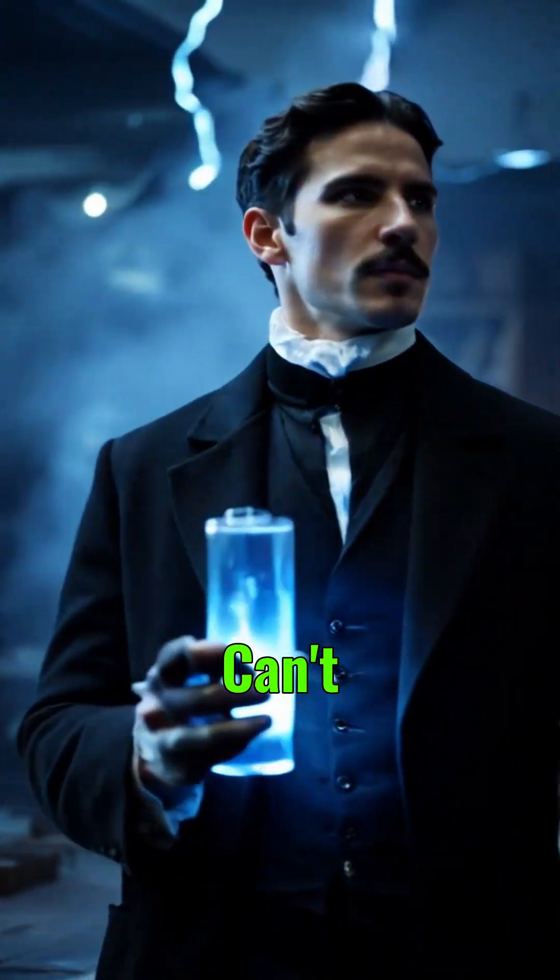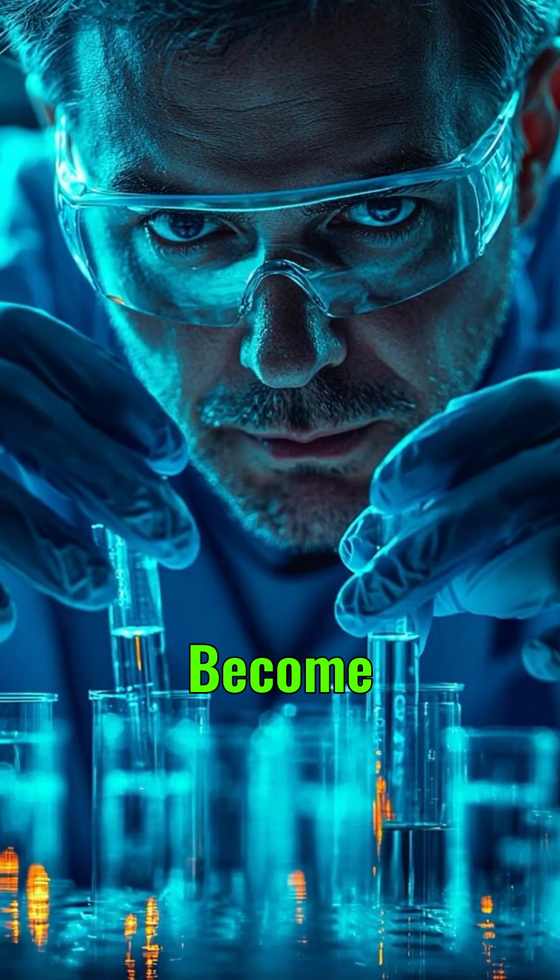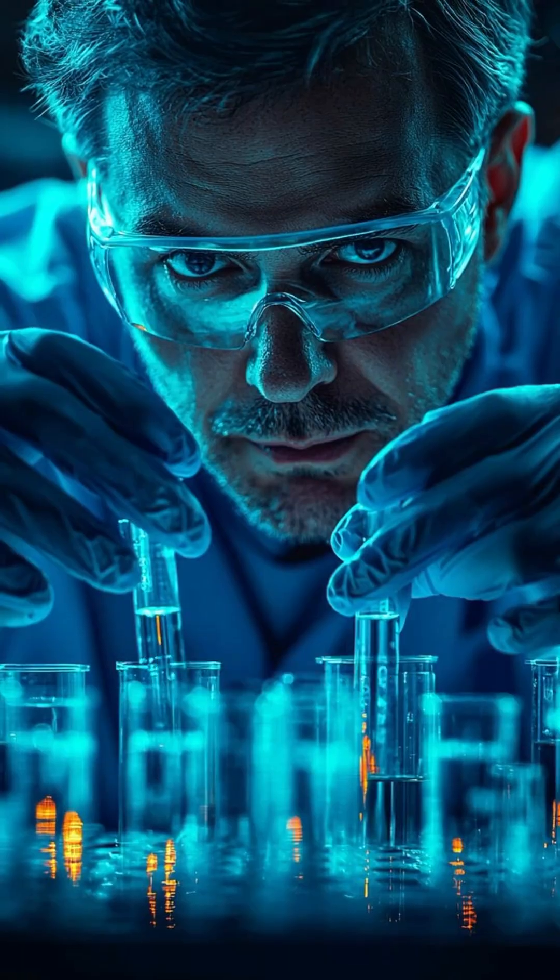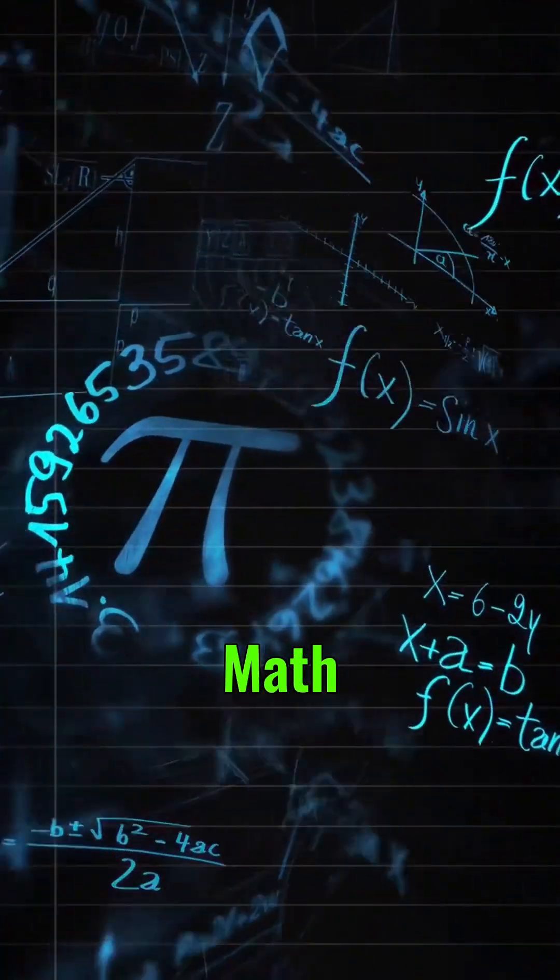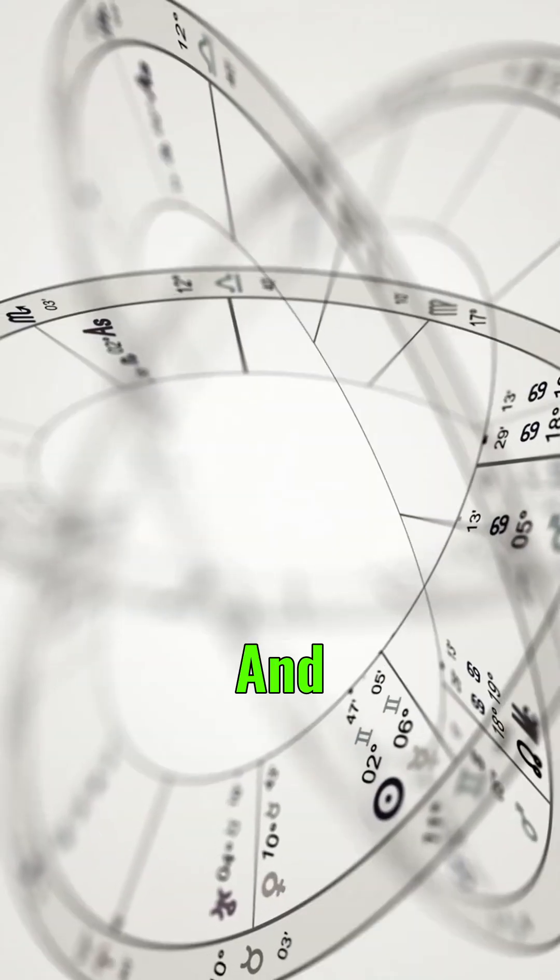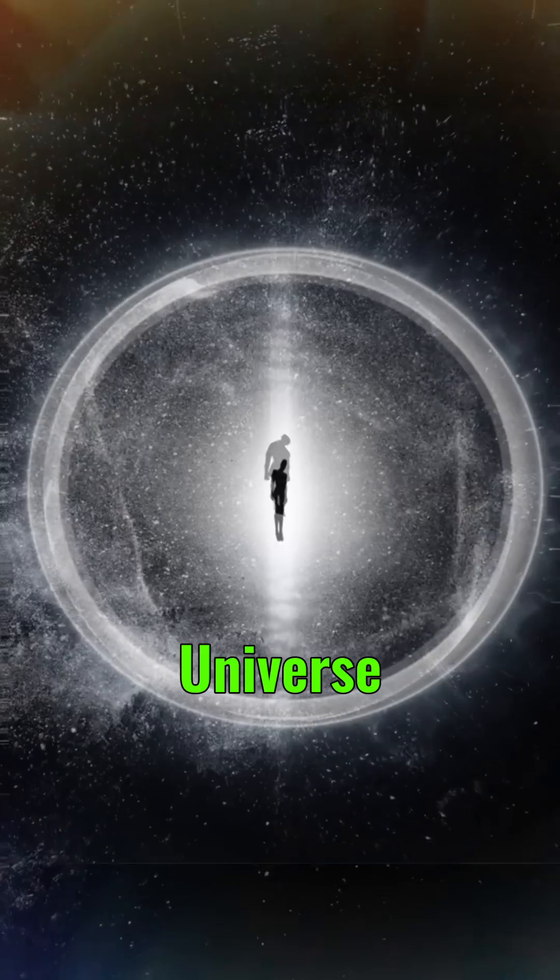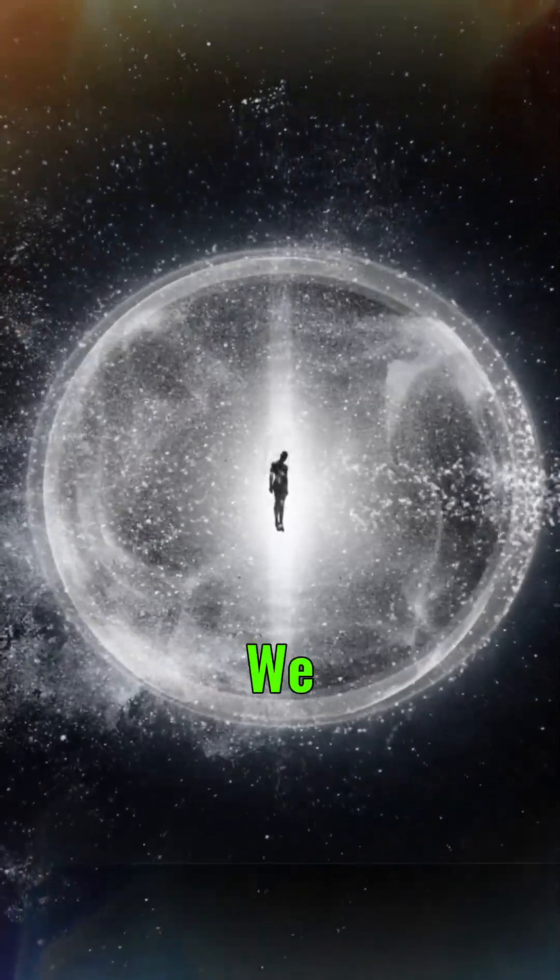What do scientists do when they can't run an experiment? They become theoretical physicists. Their job is to use math and logic to create theories and models that explain how the universe works—even the parts we can't see.